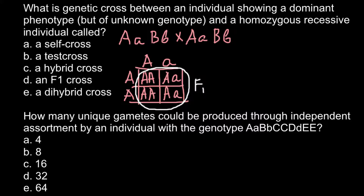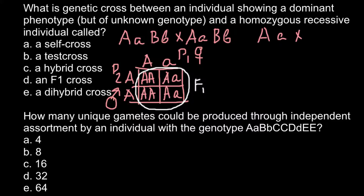When we say F1 cross, that means we self-cross all these F1 genotypes. This would be the parental generation — parent one and parent two — which we may also call female and male, or in the case of plants, the pollen donor. Answer C, a hybrid cross, is when we have one dominant allele and one recessive allele, and we cross with another parent that is also heterozygous. The difference between a hybrid cross and a dihybrid cross is that in a hybrid cross we have only one allelic pair, whereas a dihybrid cross involves two allelic pairs.